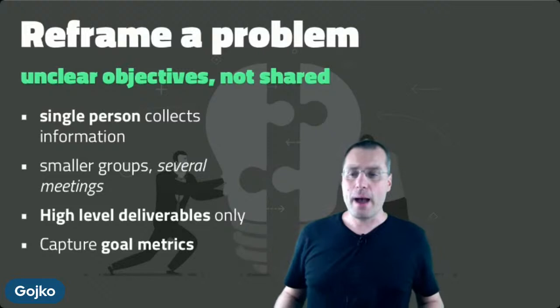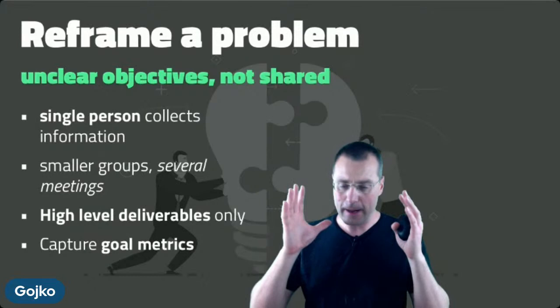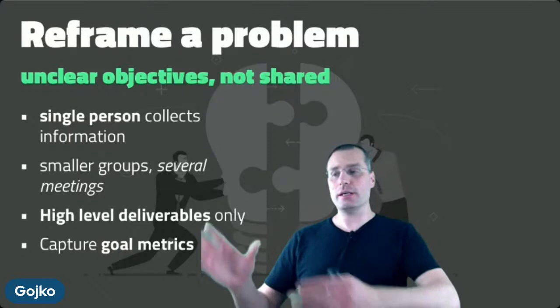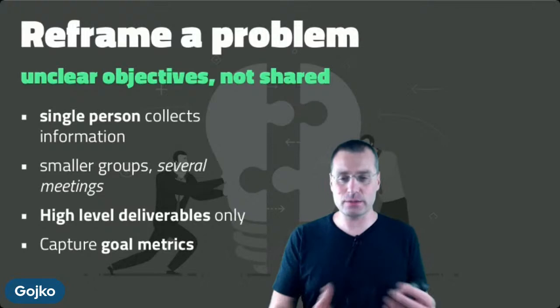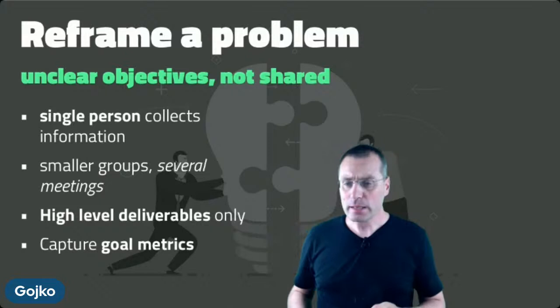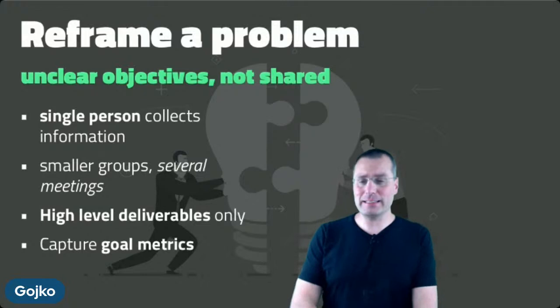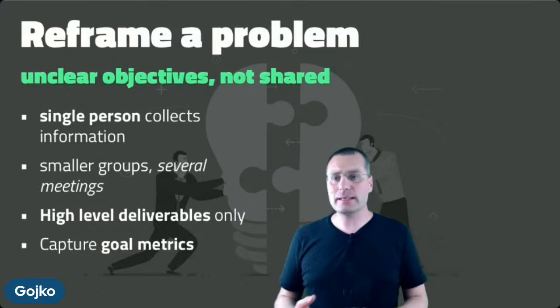Again, high-level deliverables only. Avoid low-level stuff on the map. In focusing delivery, impact metrics are important because they get revisited frequently. But in reframing the problem, goal metrics are actually more important than impact metrics. In several focusing delivery cases, goals were more visionary — something to aspire to — but in reframing a problem that's not enough. We need to be able to say these are the numbers we want to achieve, and that helps determine which approach is actually better.